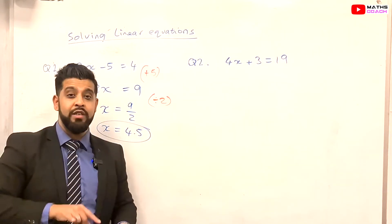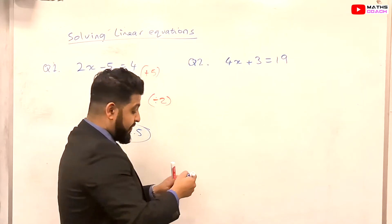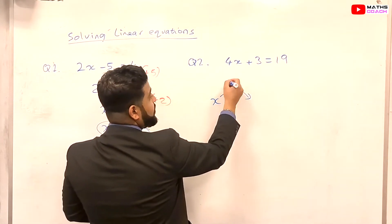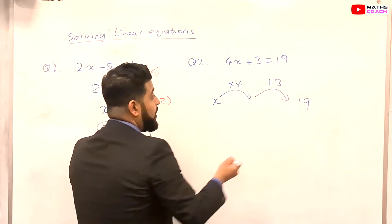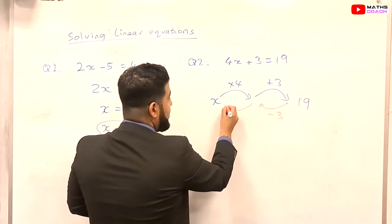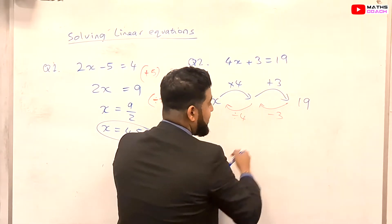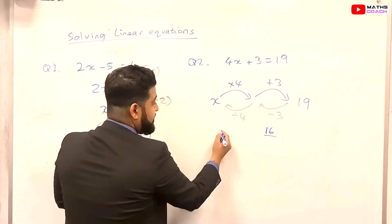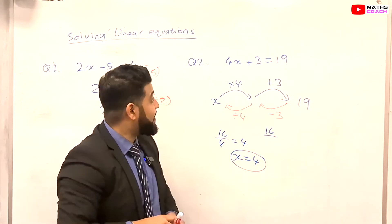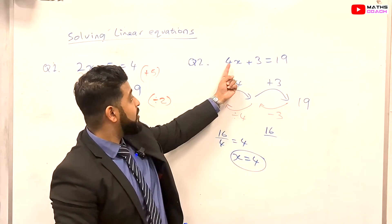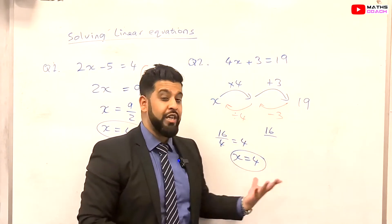With this next example I'll show you both methods. So 4x plus 3 is equal to 19. Using the flowchart method: x is multiplied by 4 first, then we add 3, and that gives us 19. Going backwards: minus 3, then divide by 4. So 19 minus 3 is 16, and 16 divided by 4 is 4. Therefore x is equal to 4. You can check this by substituting back in: 4 times 4 is 16, plus 3 equals 19. Correct.